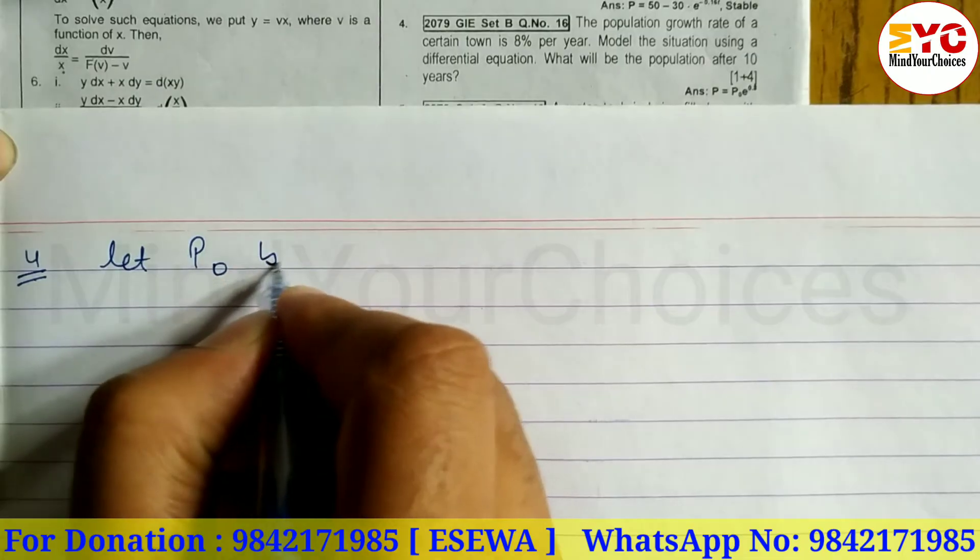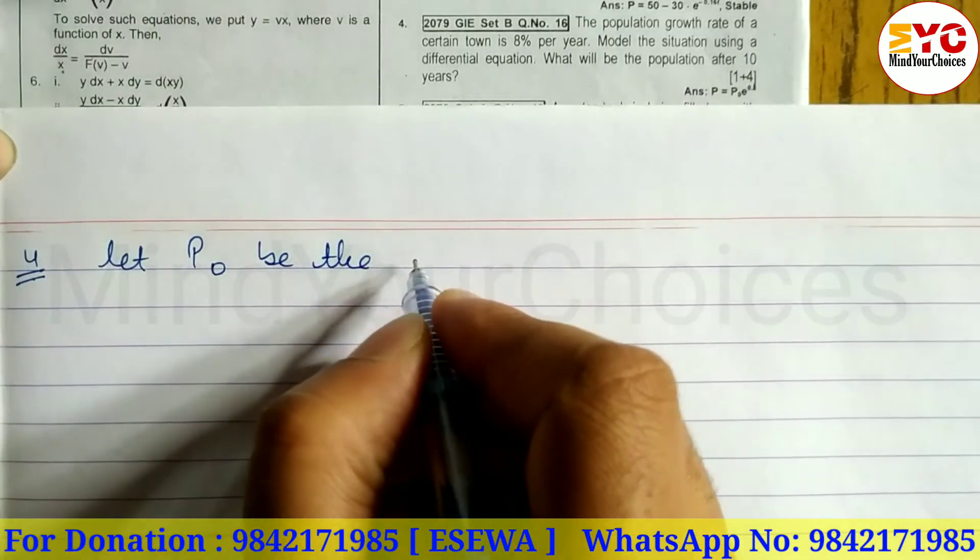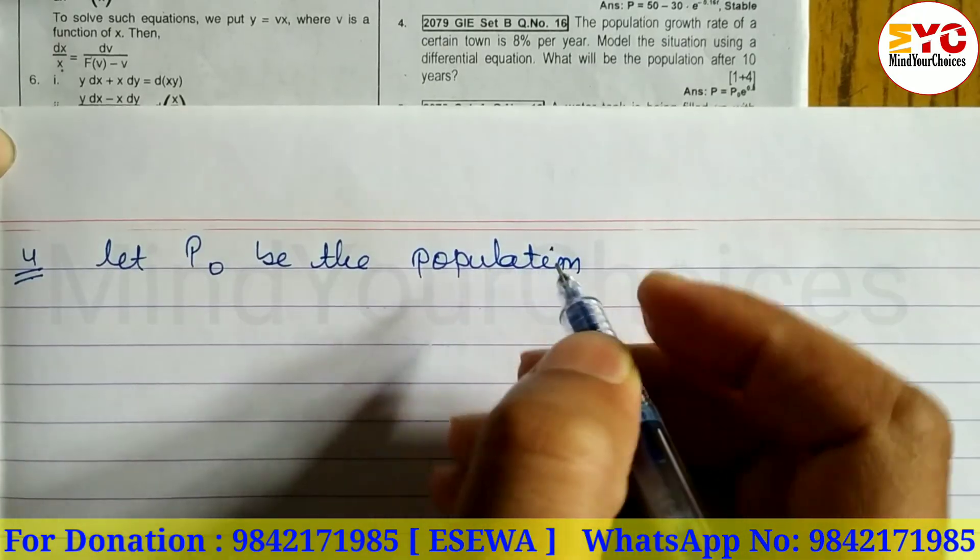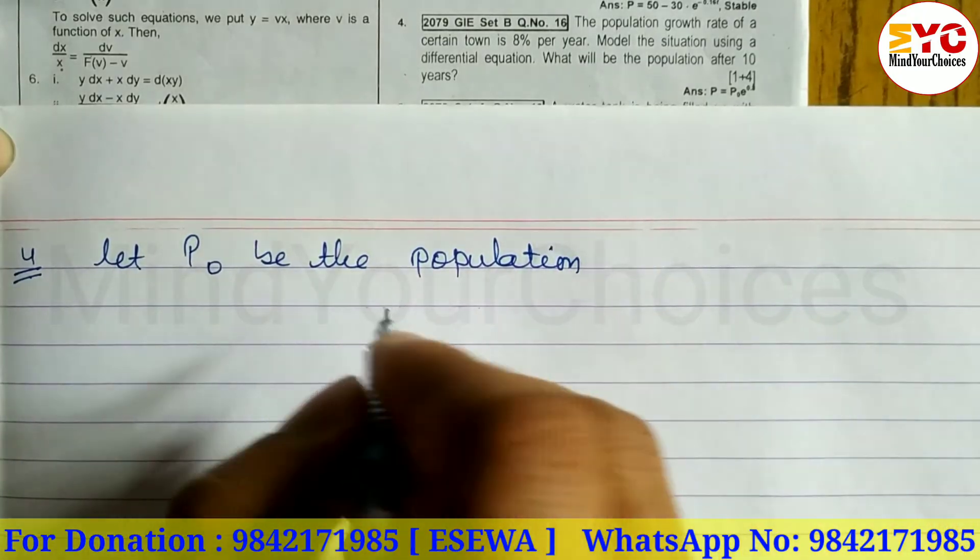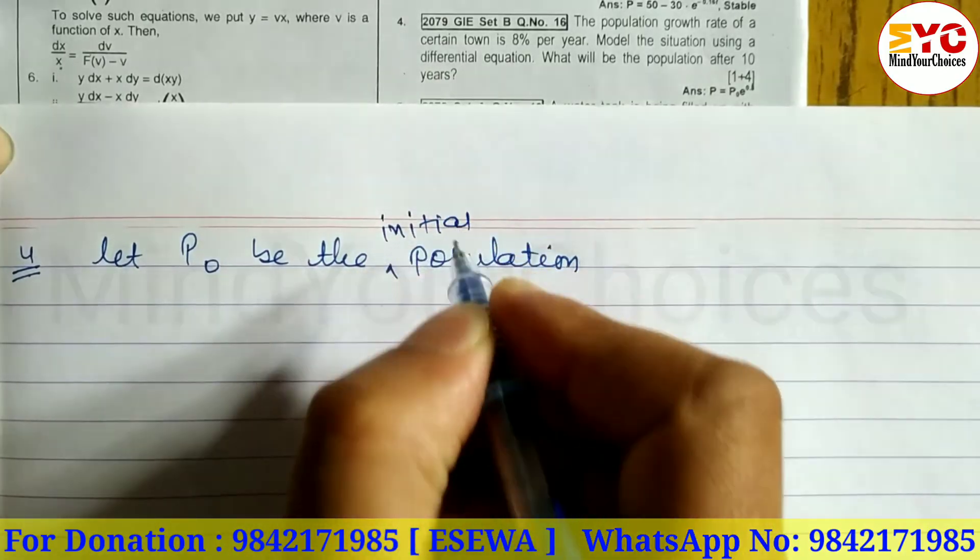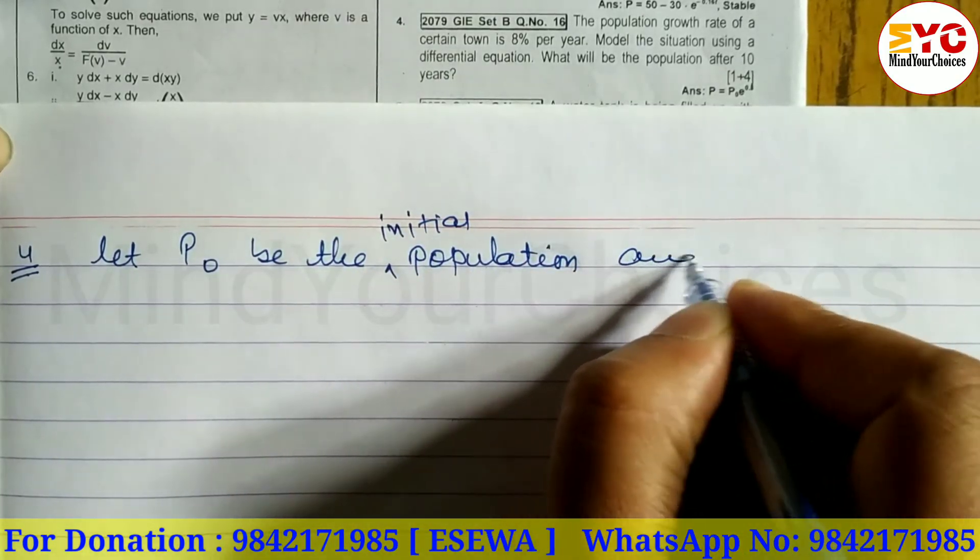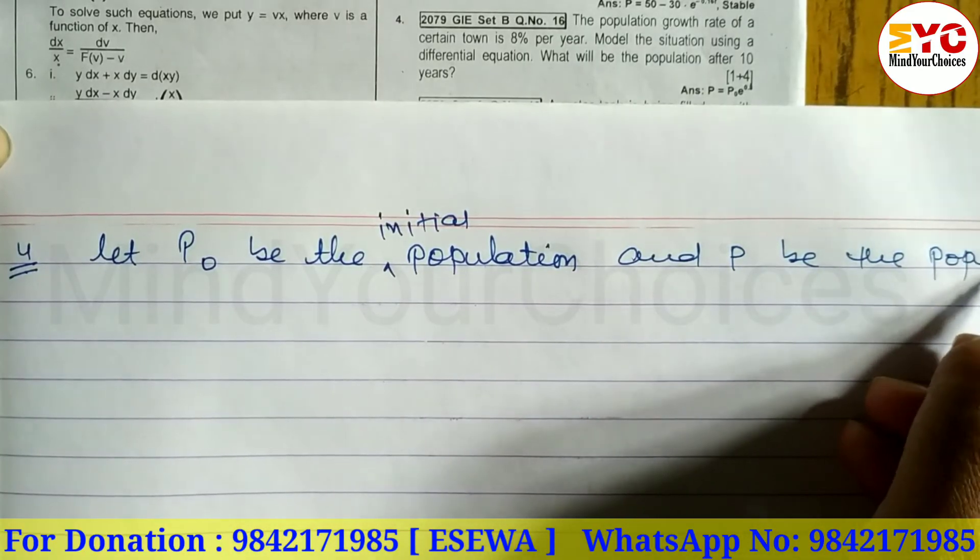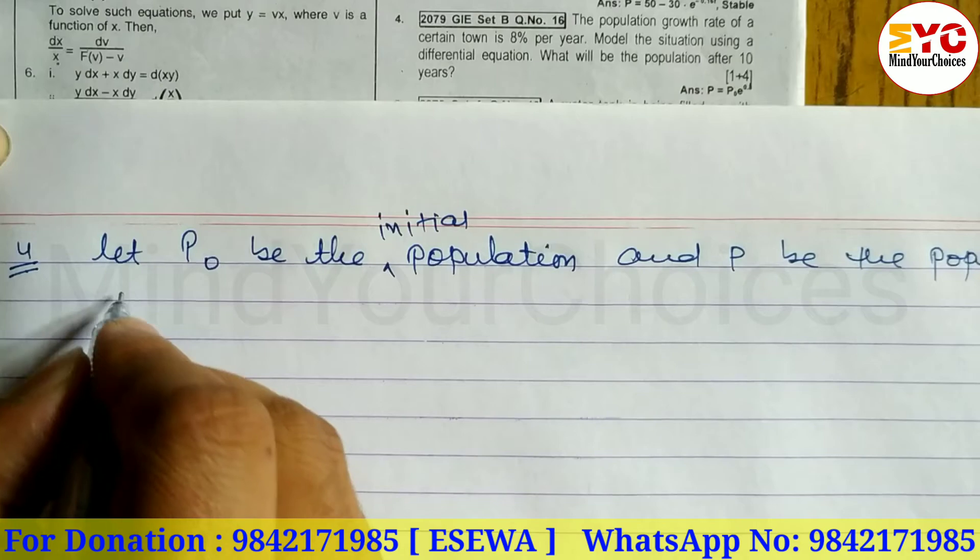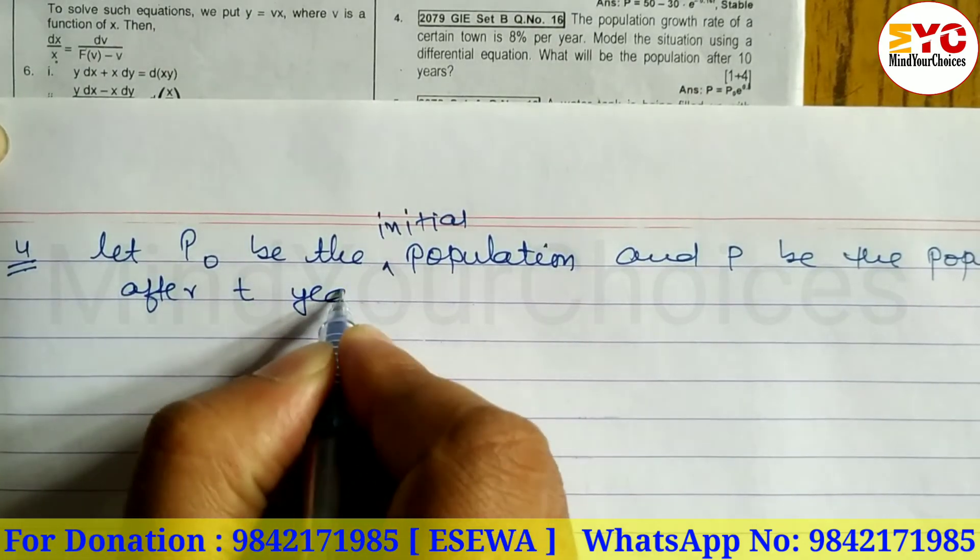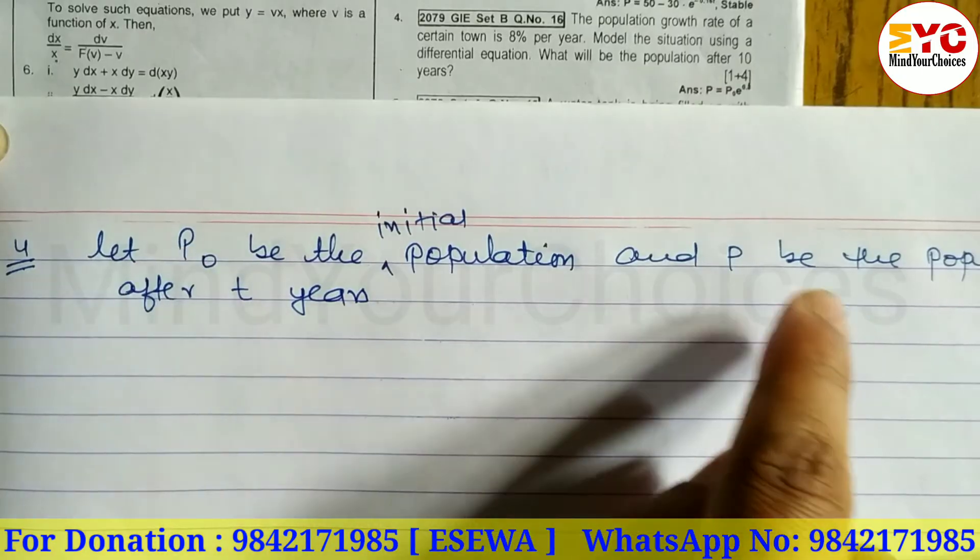Let P0 be the initial population and P be the population after T years. Now this is P and this is P0.